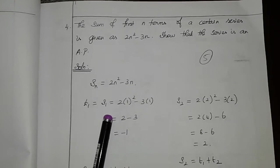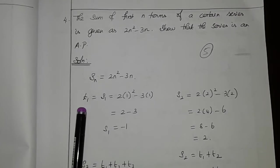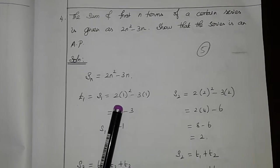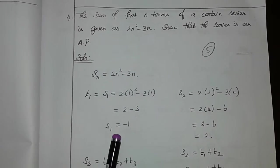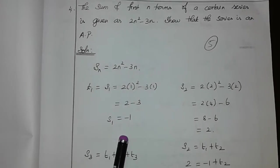S1 is nothing but sum of the first term. S1 is nothing but T1. 2 into 1 square minus 3 into 1. 1 square is equal to 1. So 2 into 1 is 2 minus 3, which equals minus 1.